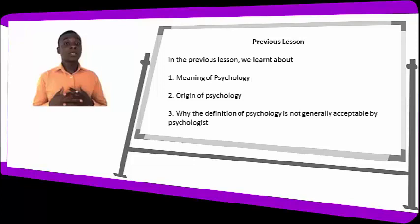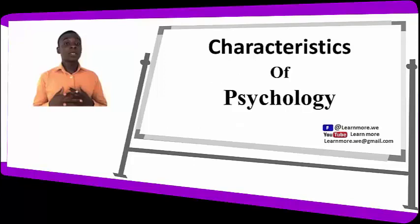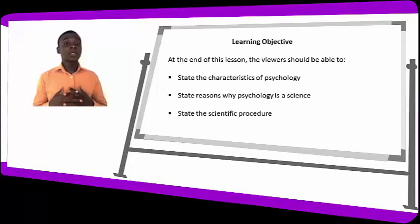In this lesson, we are looking at the characteristics of psychology. At the end of this lesson, the viewer should be able to state the characteristics of psychology, state the reason why psychology is a science, and state the scientific process. We just have three major objectives in this lesson.